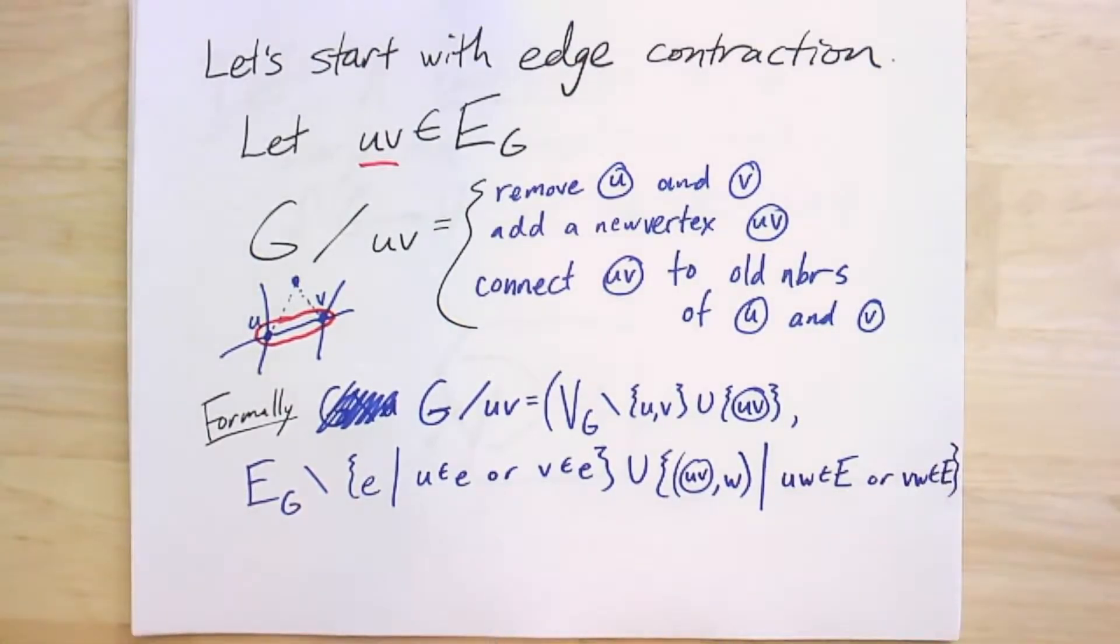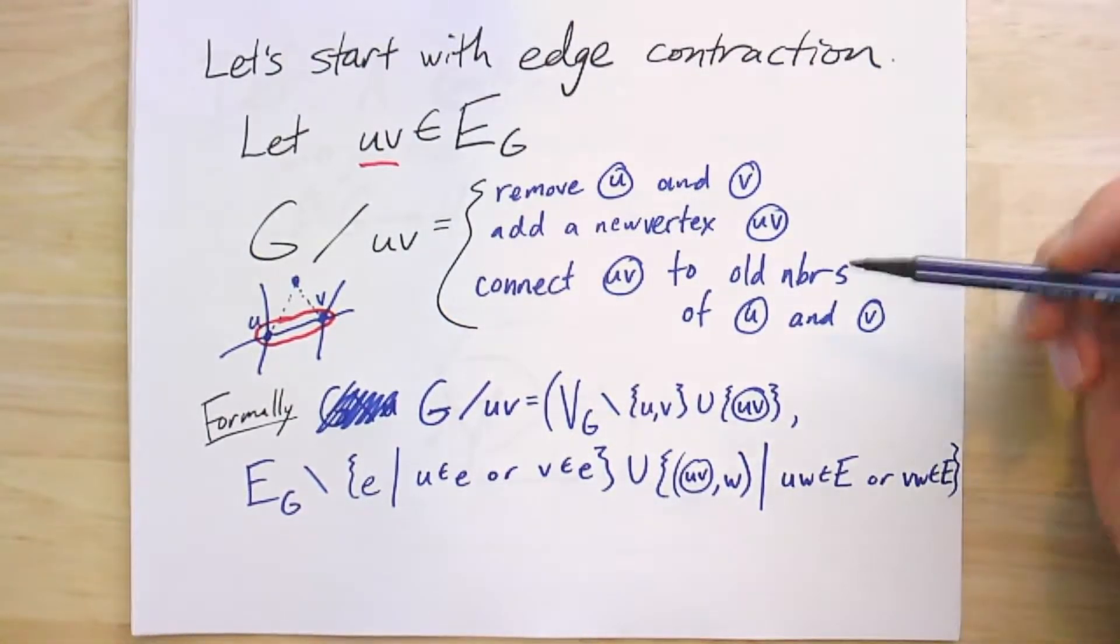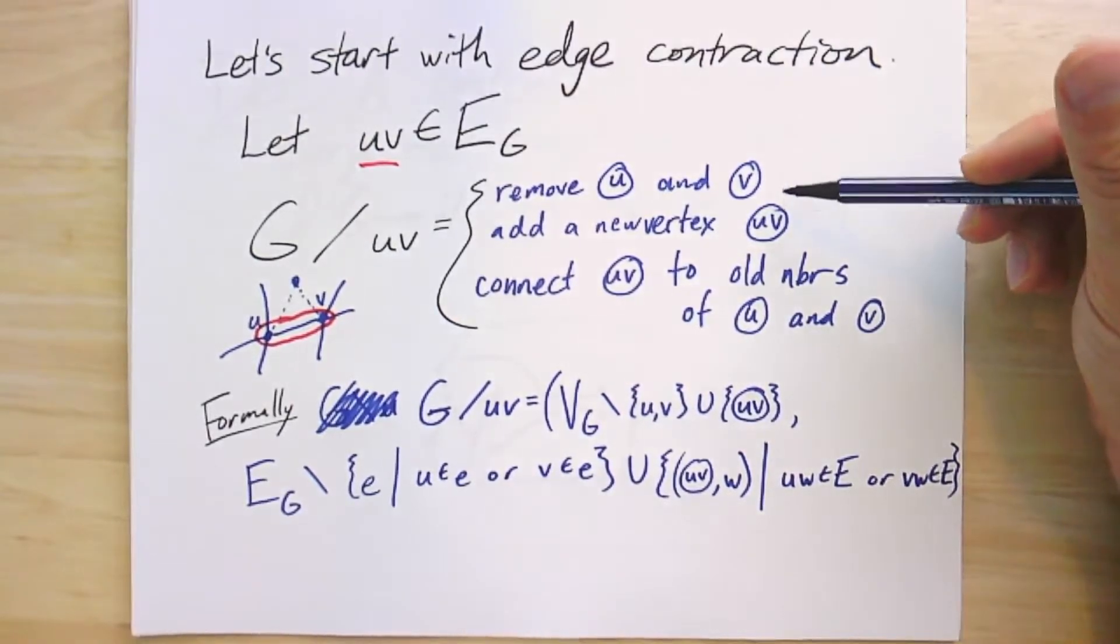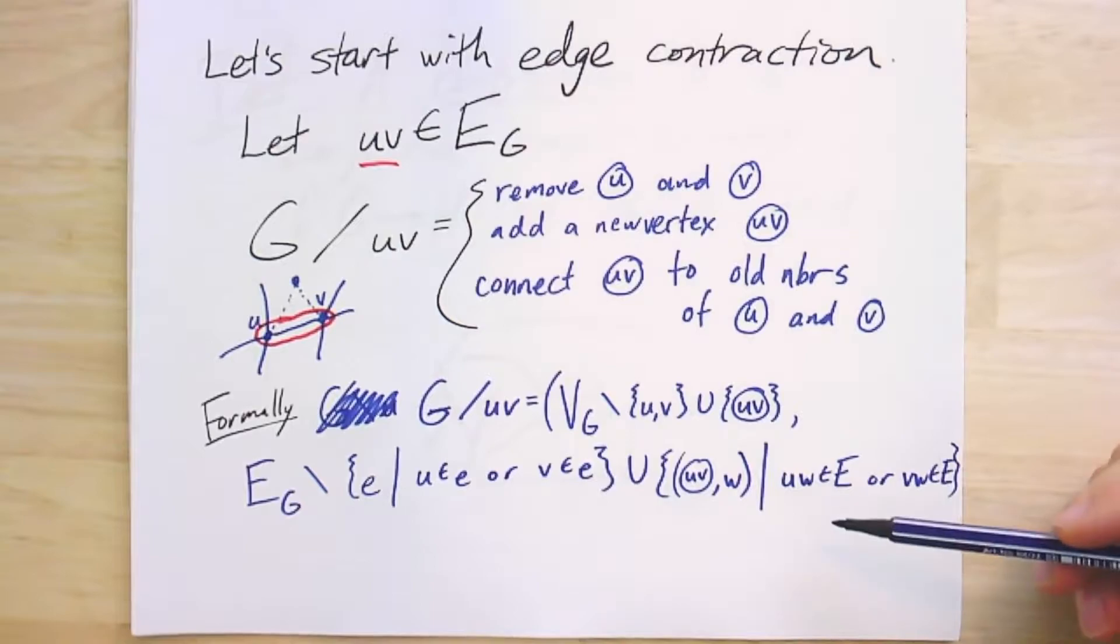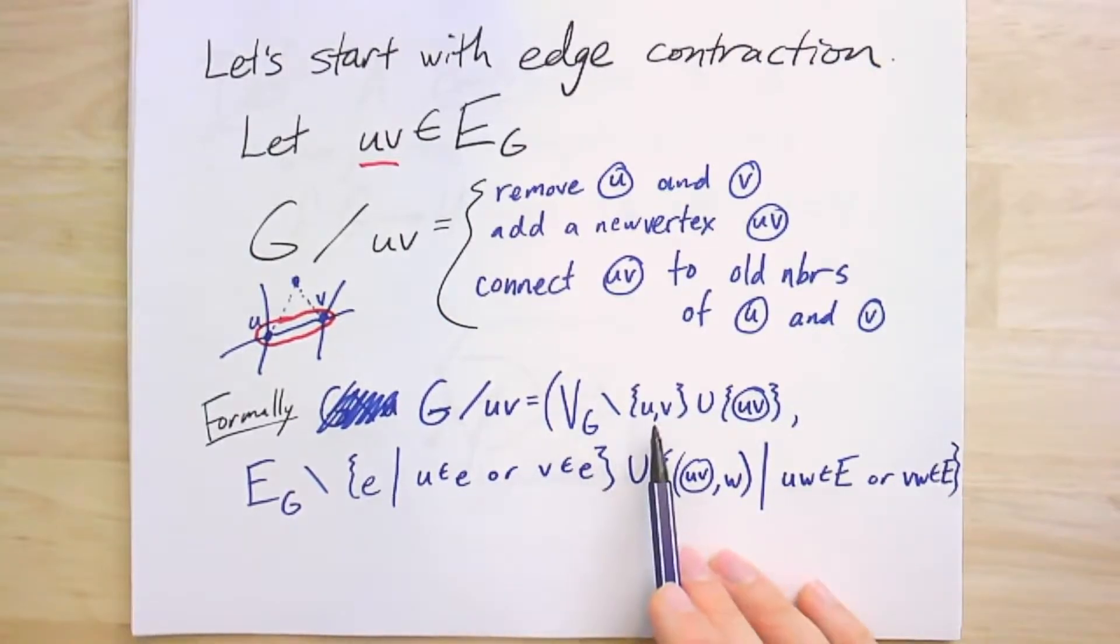Frankly, it's kind of a mess. Intuitively, I think it made sense as an operation that you can do. When you try to write down carefully what exactly happens, it gets a little bit messy. You can try to optimize a little bit by reusing one of these vertices.